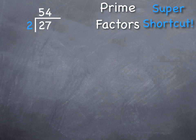Does 3 go into 27? And the answer is, yes, it does. So I'm going to write 3, and divide 27 by 3, which leaves me with 9.